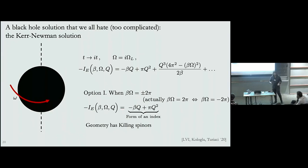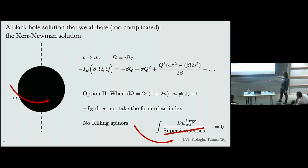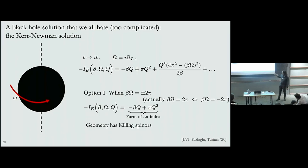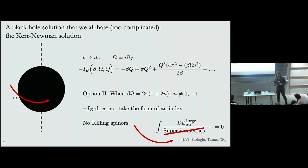Option two is to put β·Ω to take any of the other values. You might think there's a problem immediately because the Euclidean action does not take the form of an index — it has some complicated temperature dependence. However, a fact about these solutions when n is different from zero and minus one is that the geometry does not have Killing spinors.